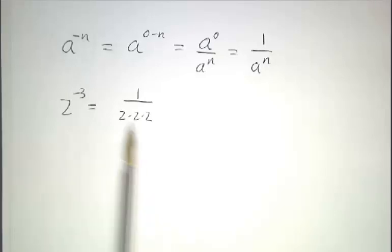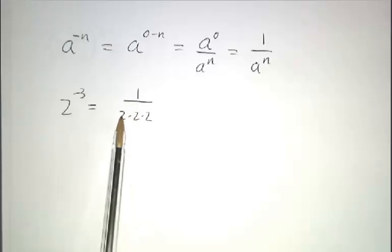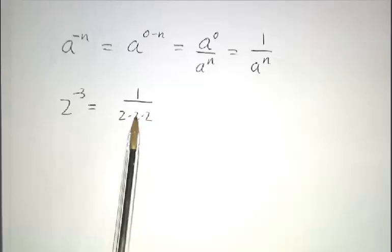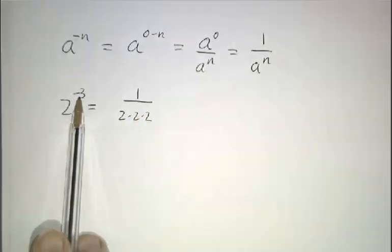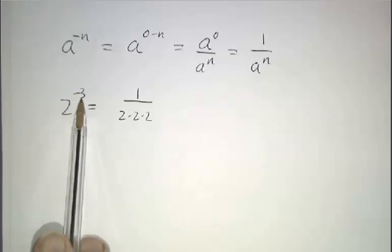I will describe this as saying there are negative 3 powers of 2 in here. What it really means is that you have to divide by 2 three times instead of multiplying by 2 three times. Negative exponents means divide that many times. Positive exponents means multiply that many times.